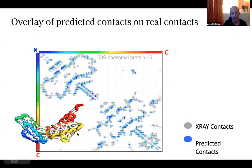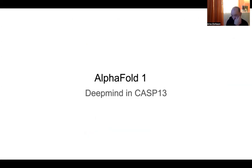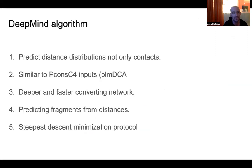Here is another example: predicted contacts and the real contacts shown together, and you can see that you can make a nice model of the protein using some modeling software. This illustrates that contact-based methods can work — the predicted structure is very similar to the real one — and this was the state of the art in 2018, when AlphaFold1 was released.